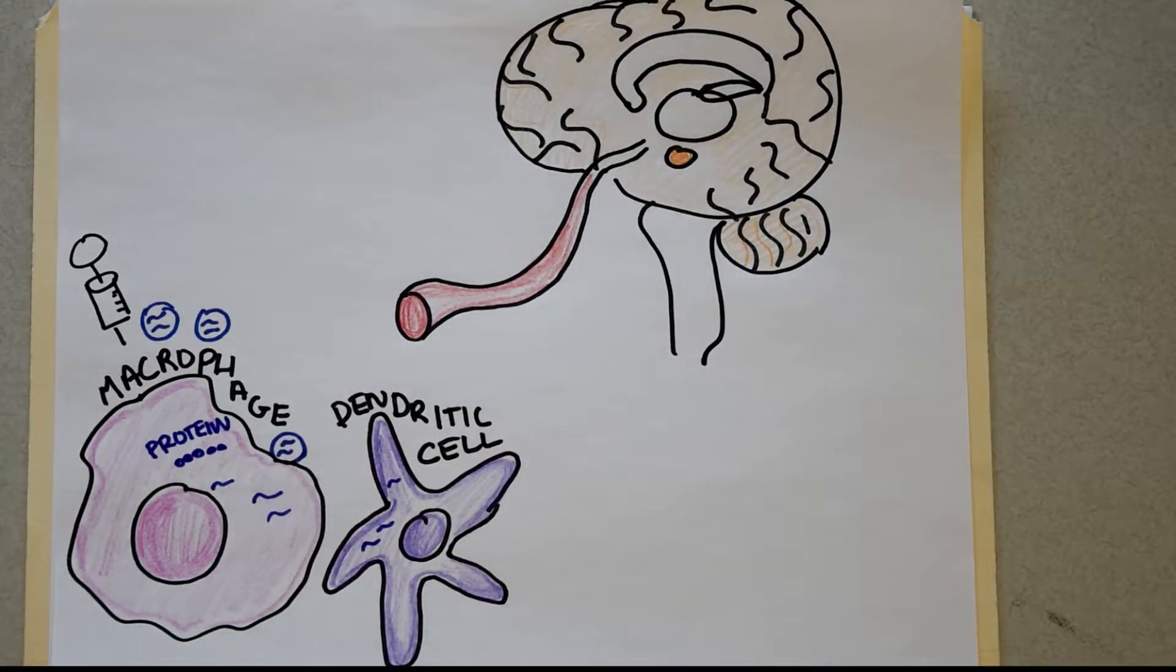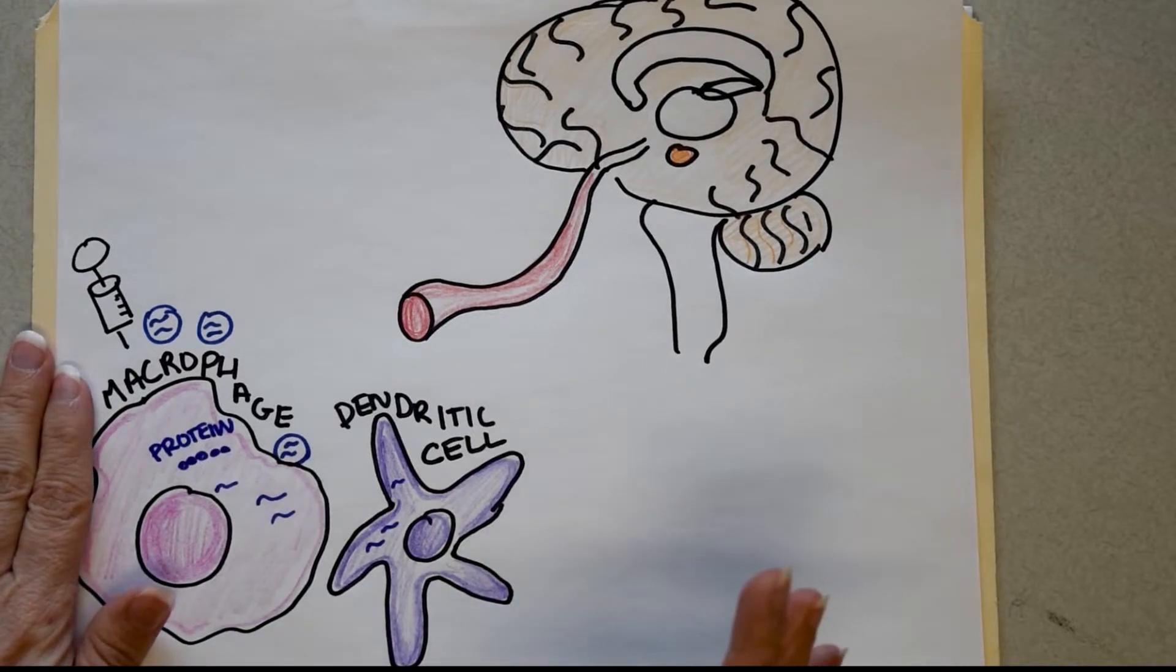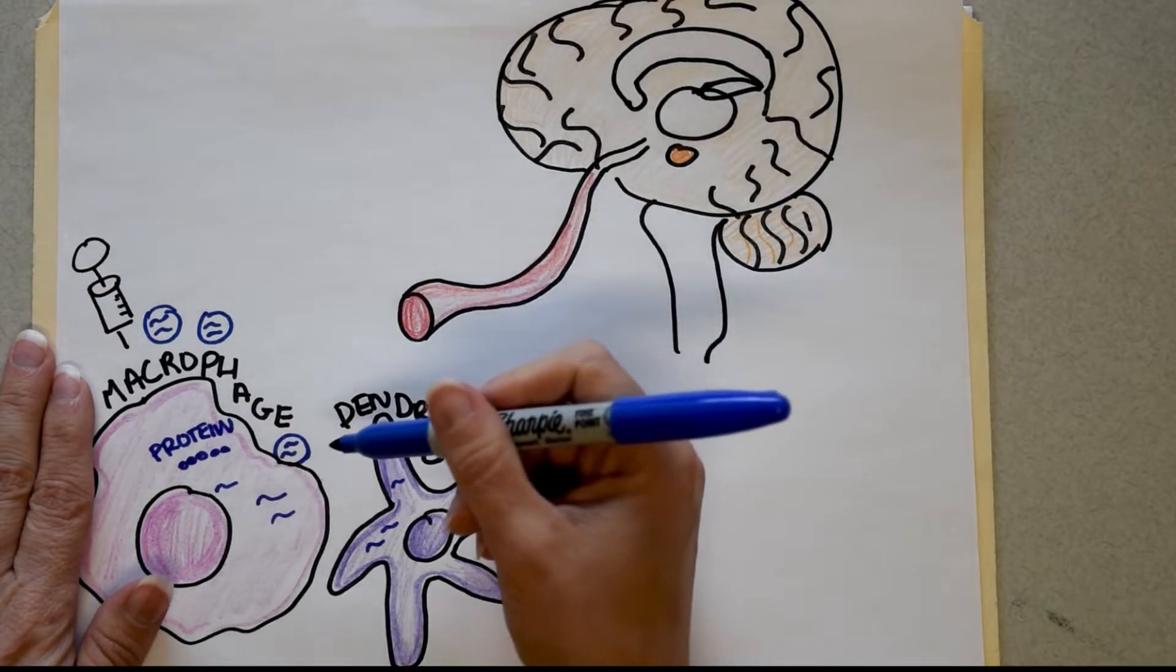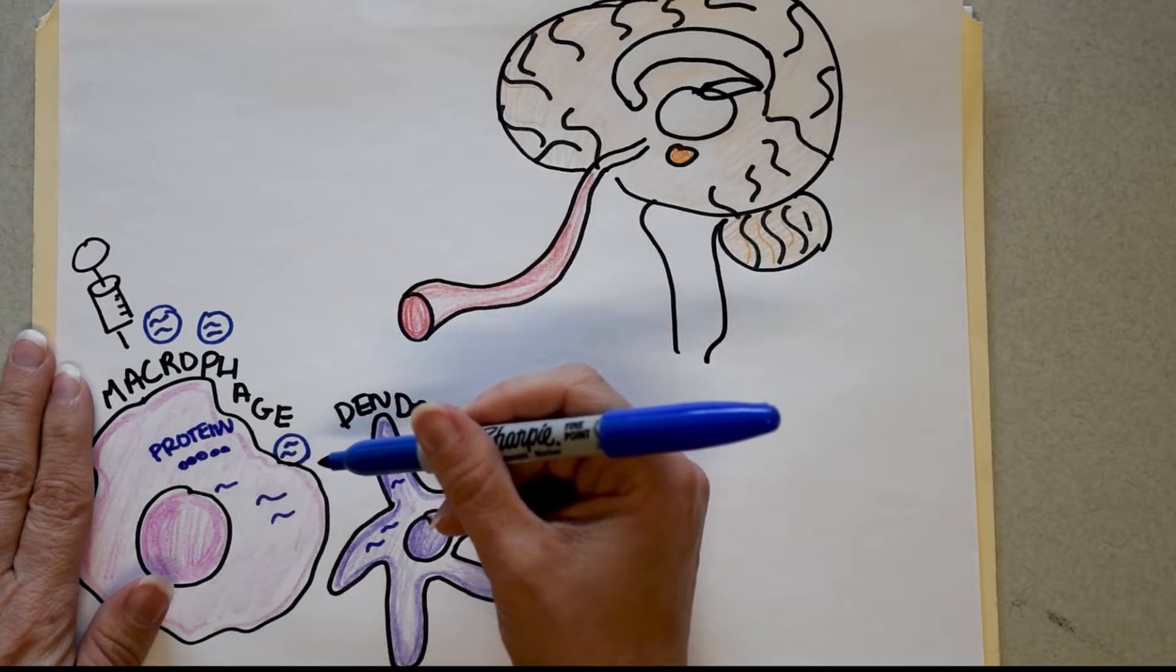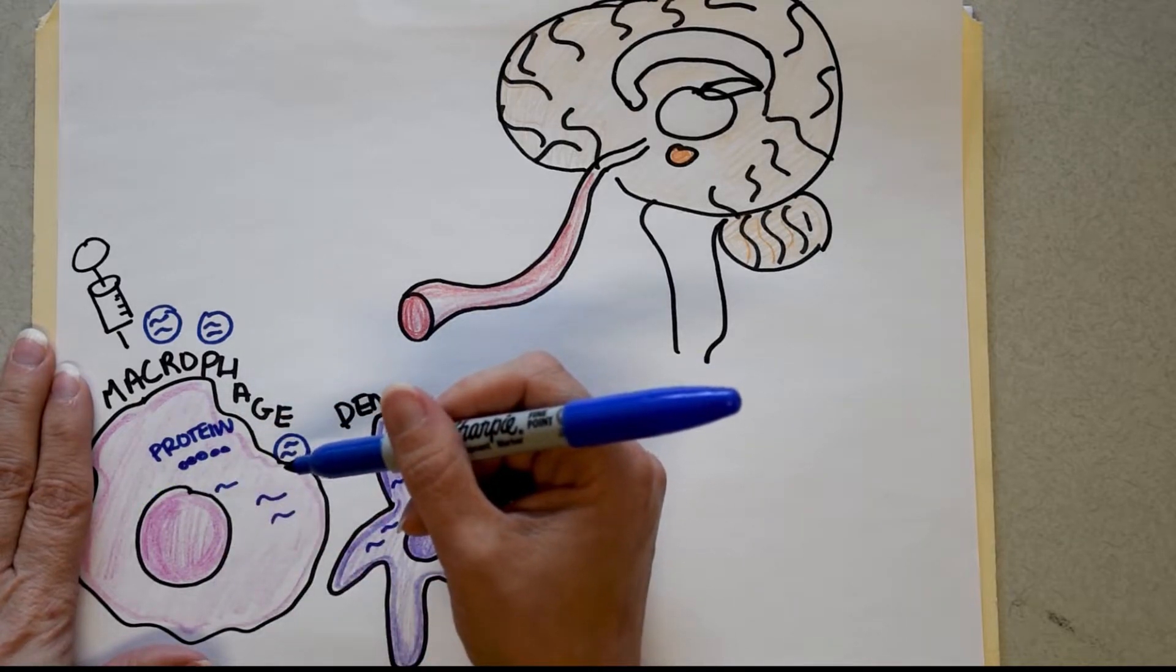And if you recall, the mRNA vaccine contains just the code for the outside of the virus. So the spike protein is how the COVID virus enters your cells, specifically lung and intestinal cells. And the code here is just for that outside part. So no virus, no protein, just the mRNA code that your cell then turns into a protein.